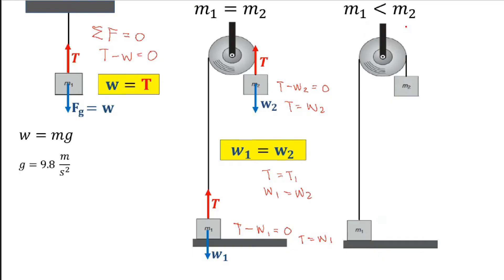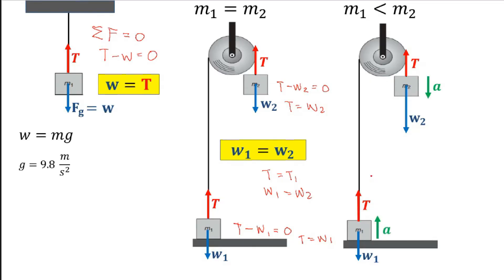If the masses are not equal — assume mass 2 is heavier than mass 1 — then the system is not in equilibrium. Mass 1 has weight 1 and the rope experiences tension. Since the same tension acts along the whole rope, and because mass 2 is heavier, the weight of mass 2 is greater than the tension of the rope. Therefore, tension is less than weight 2, and our system will accelerate downward. If the acceleration is going down for mass 2, then mass 1 experiences the same magnitude of acceleration but directed upward.